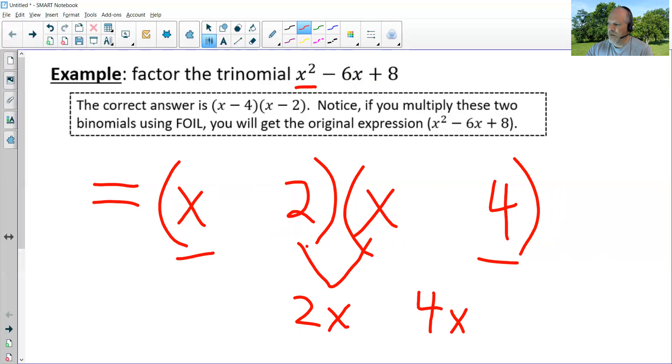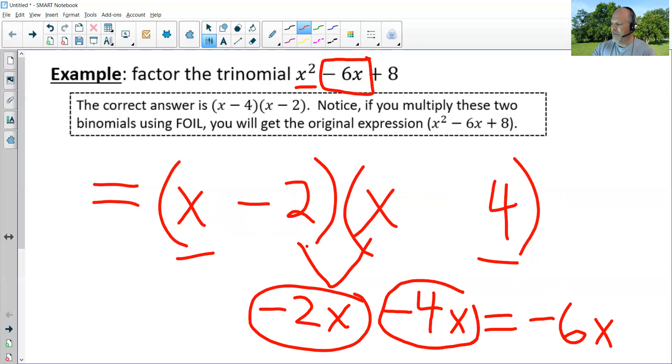Outside times outside gives me four x. I need these two to combine together to equal negative six x. So if I put a minus sign there and a minus sign there, negative two x minus four x is indeed negative six x. So that seems to be the winning combination. So I need a negative two x which means I'll put a minus sign here. And I need a negative four x, so I'll put a minus sign here.